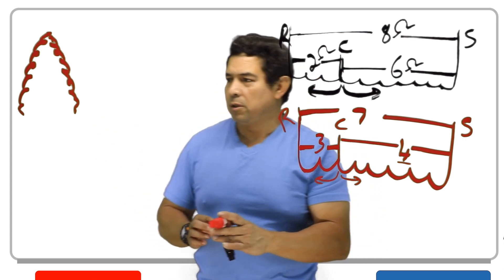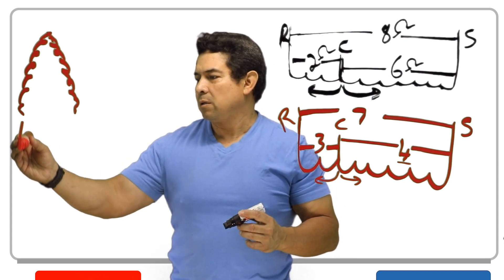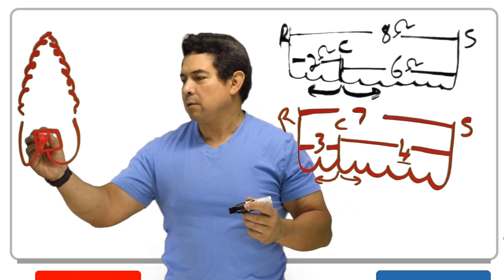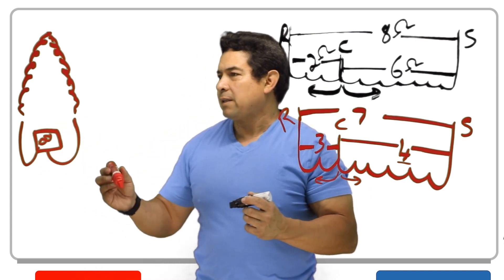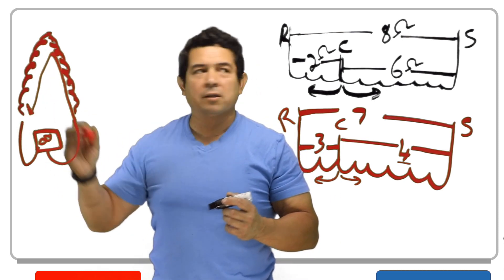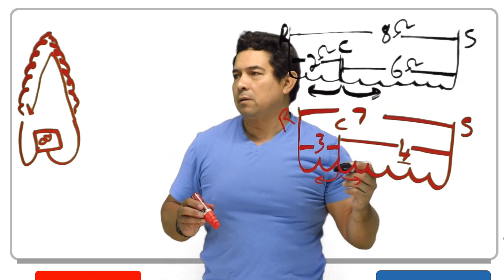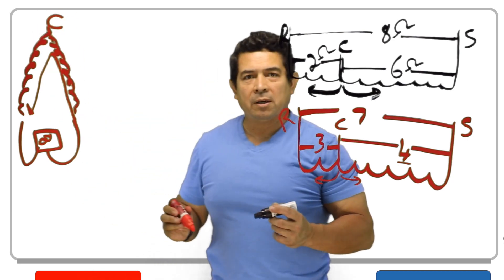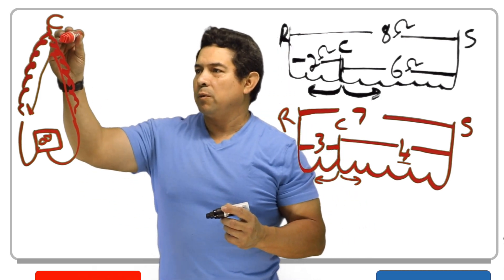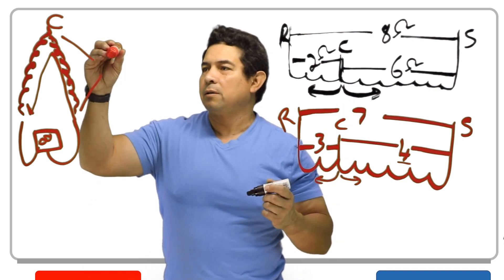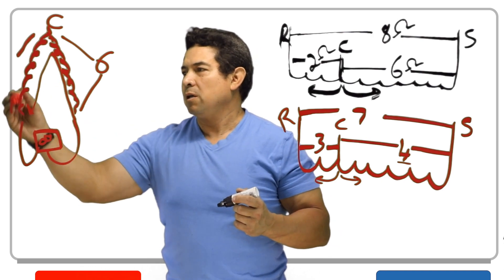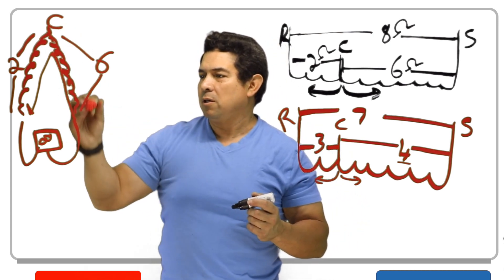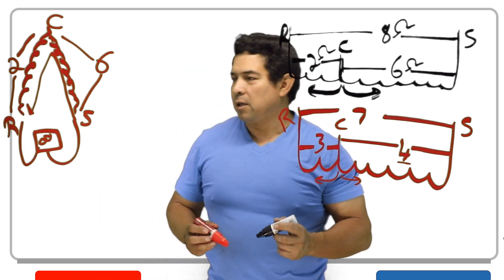If I take an ohm reading across these two terminals, I get 8 ohms total. From there, I can identify the common connection. Reading between one pair gives me 6 ohms, and between the other pair gives me 2 ohms. So this tells me that one terminal is my common connection, the 6-ohm side is my start, and the 2-ohm side is my run connection.